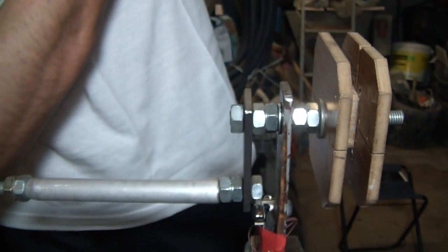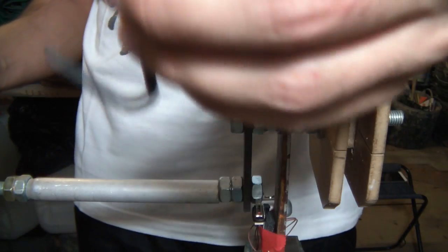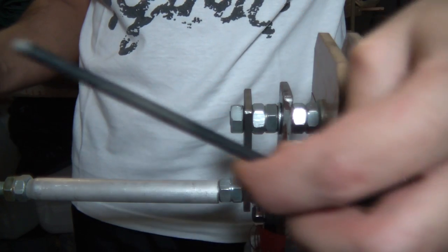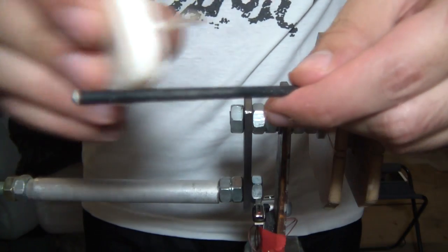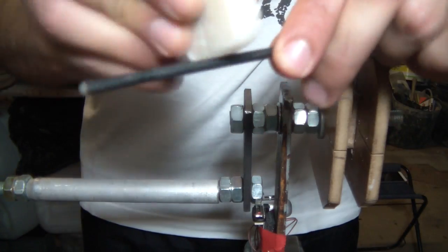I use a candle to create a thin layer of wax on all the parts that contact the coil. The reason for this is because I used super glue to all the coil layers together and this prevents the copper from getting glued to the winder.